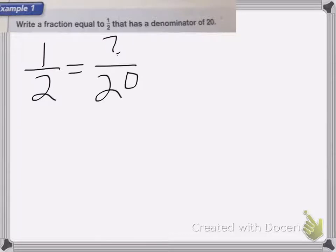Now remember, to rename fractions, I can multiply it by a fraction that equals 1. So I need to figure out what fraction I'm going to multiply 1/2 by to equal something over 20.